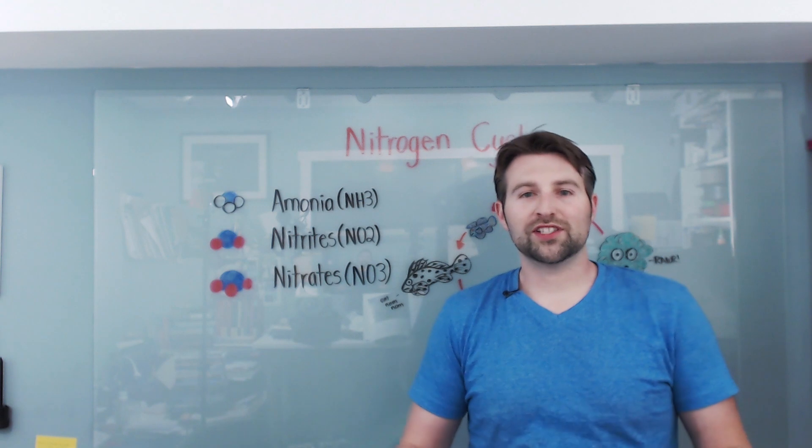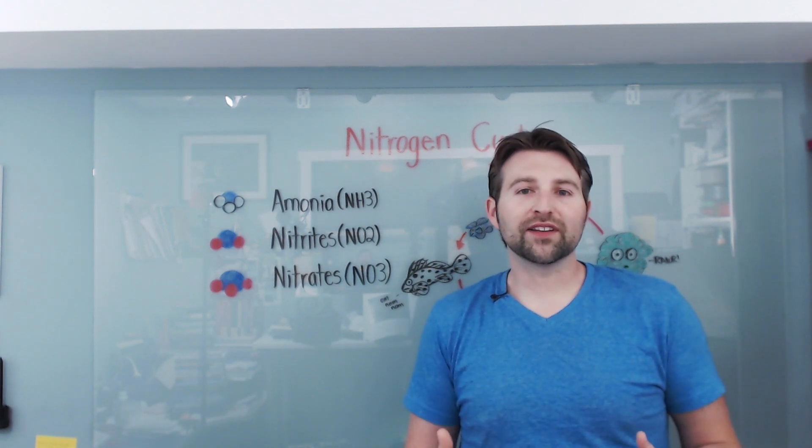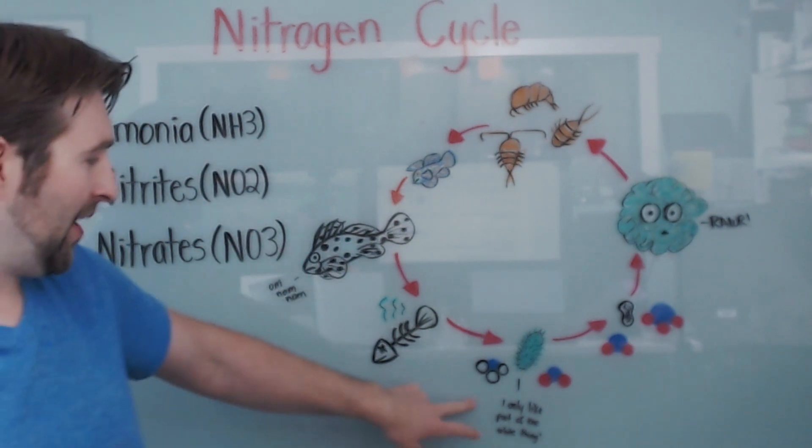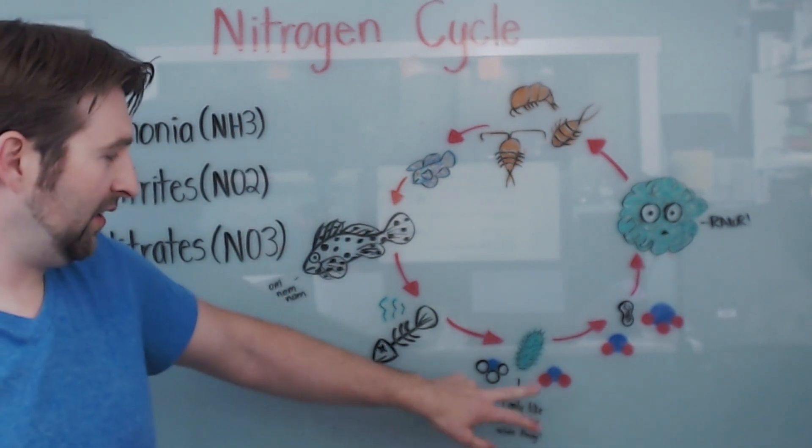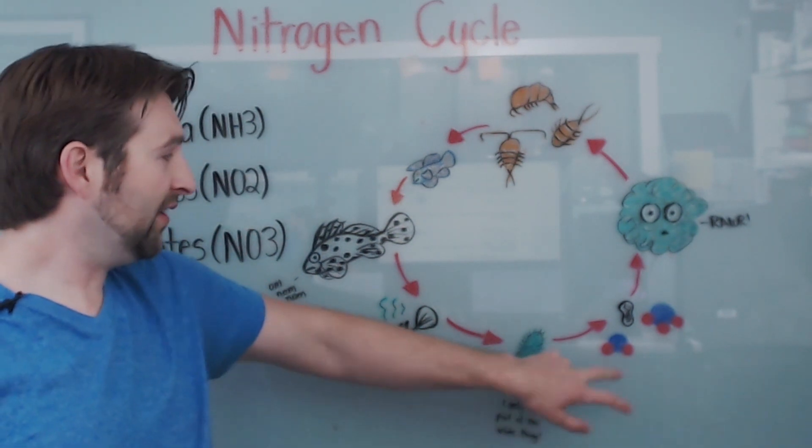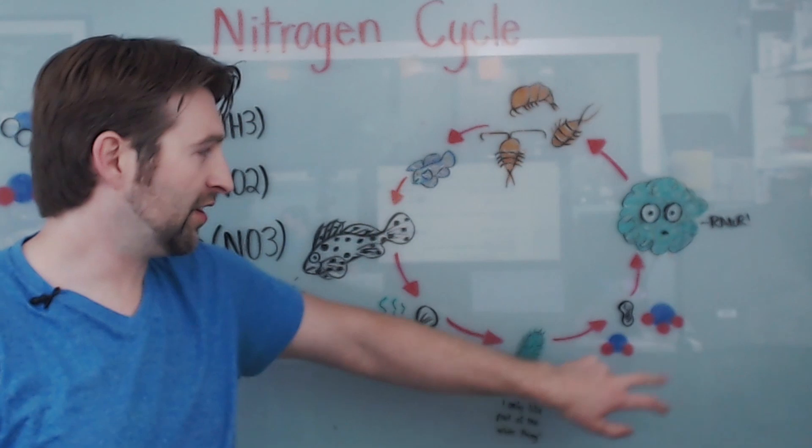Essentially the whole nitrogen cycle is really just building up these beneficial bacteria inside of your tank. Look at the process again. You have fish in your tank. If a fish dies or if it poops, you feed it and food breaks down in your tank, it turns into ammonia. Now the bacteria is going to consume that ammonia, turn it into nitrites, and then another bacteria is going to turn into nitrates.